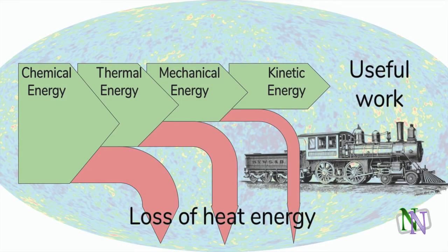The principle of conservation of energy was discovered by the engineers and scientists who developed steam power. They often represented the processes in diagrams like this, where the width of the arrows is proportional to the amount of energy present at any moment, and the forms of energy are transformed from one to the other.